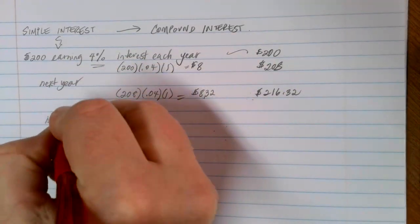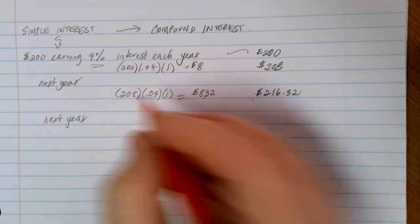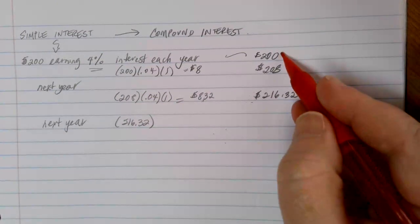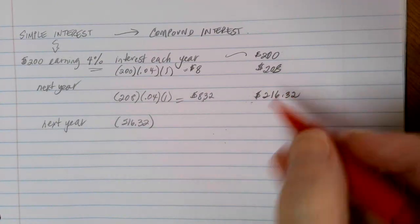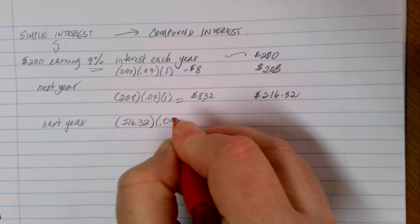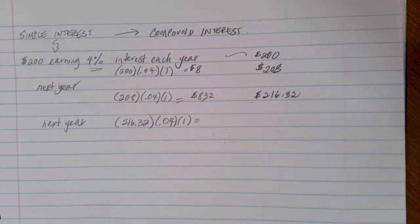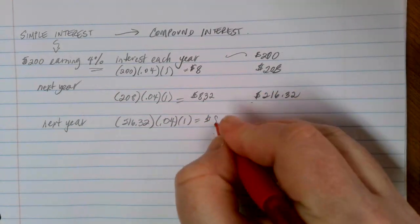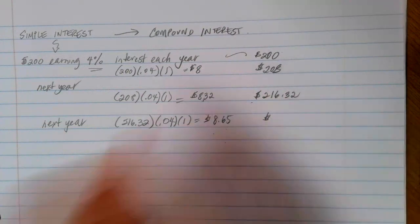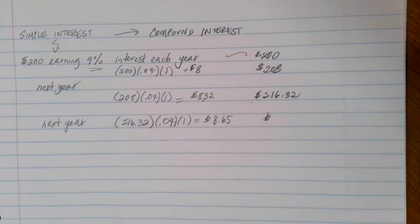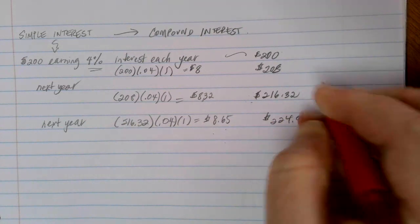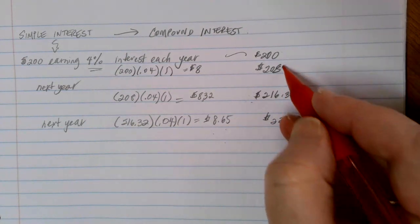So if I go on to the next year, for example, now, same idea would hold. This time, I'm going to take the $216.32, my initial $200 and all the interest and reinvestment that I've earned, I'm going to pay 4% of that over a year. And that's going to get me $8.65 for the next year, which altogether would give me a total of $224.97 at the end of one, two, three years.